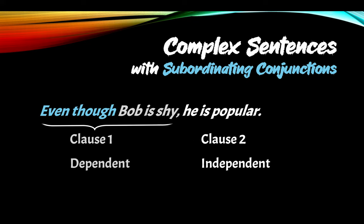We can even say: even though Bob is shy, comma — so dependent clause — he's popular — independent clause. So subordinating conjunctions start a dependent clause.